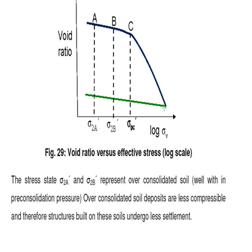Looking at the expansion or recompression curve (the green line), if you apply Sigma 2A or Sigma 2B, those stresses are still less than the pre-consolidation pressure. Whenever you apply a stress which is less than the present overburden stress, that condition is called overconsolidation.